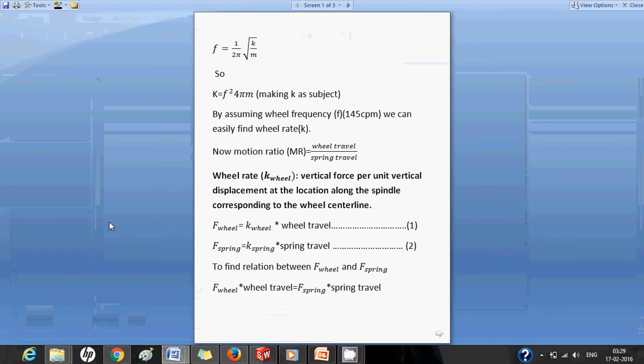This is the formula f is equal to 1 by 2π root under k by m. This is a very common formula which we use in a spring mass system. In this case f is my wheel frequency, k is my wheel rate, and in the next equation I made the k as the subject, so k is equal to f squared 4π²m.